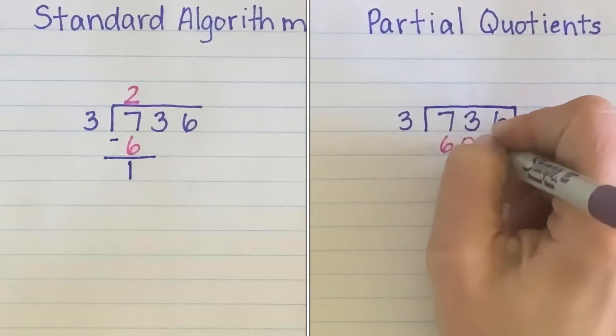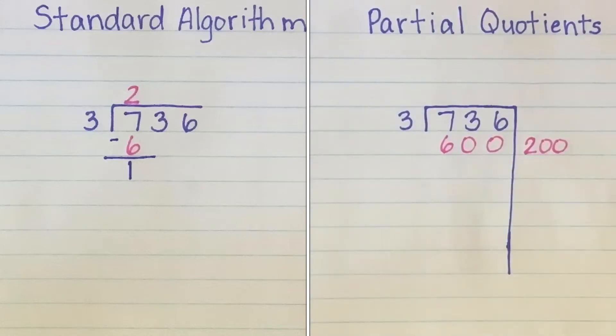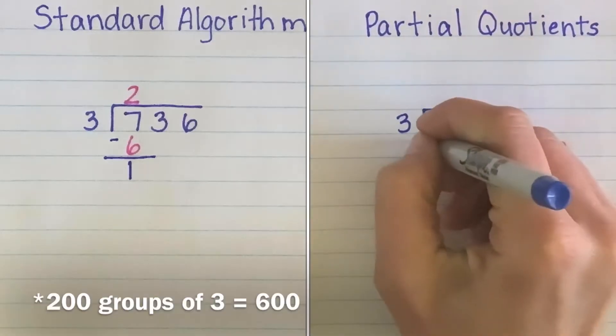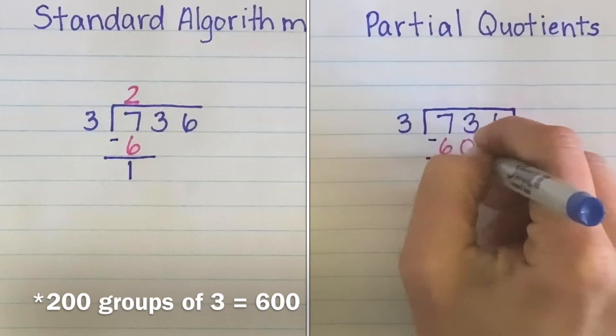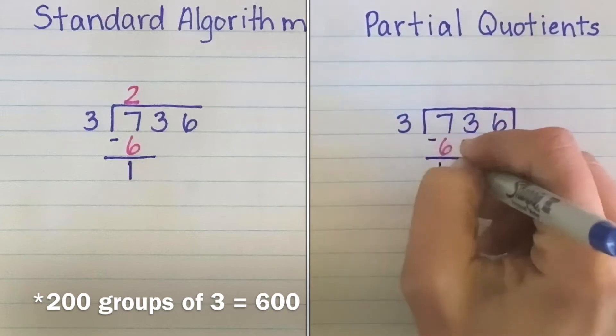200 groups of 3 is essentially 200 times 3, and that would be 600. Just like 2 times 3 on the standard algorithm side is 6.